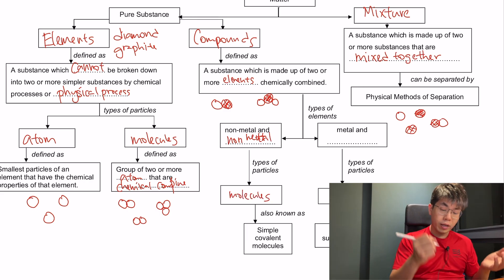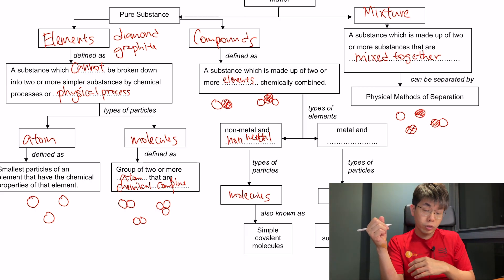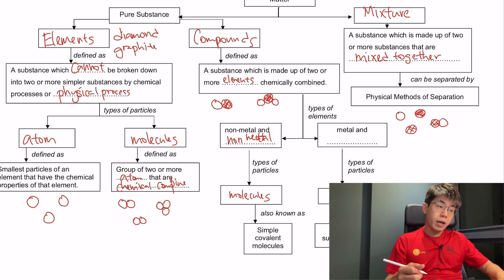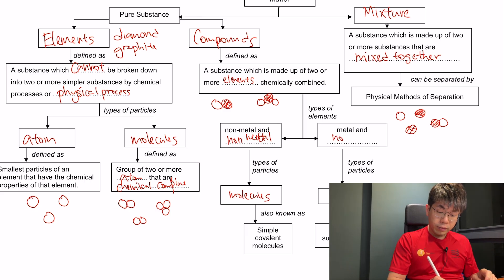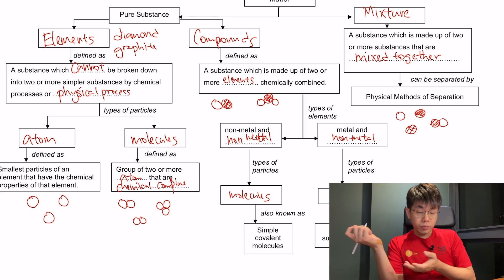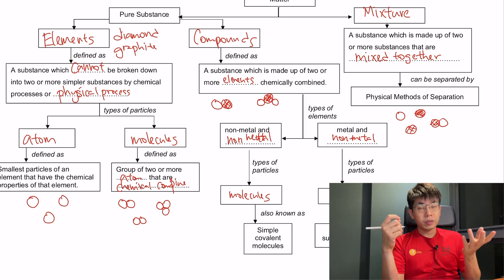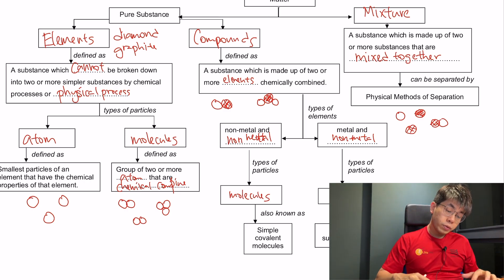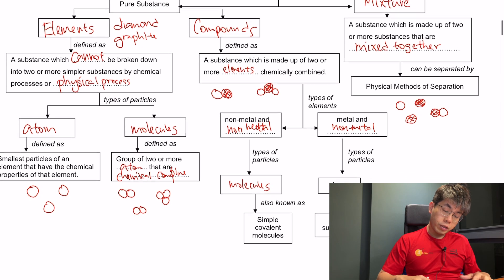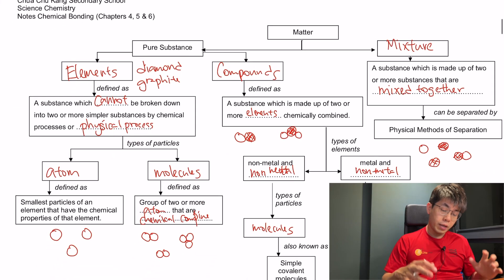When a non-metal and a non-metal are joined together, they are known as simple covalent molecules. When a metal element and a non-metal element are together, they transfer electrons, form ions, and form substances known as ionic substances. This is a simple summary of the different types of matter that can be present.